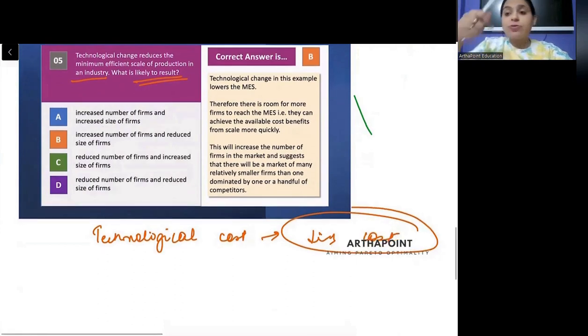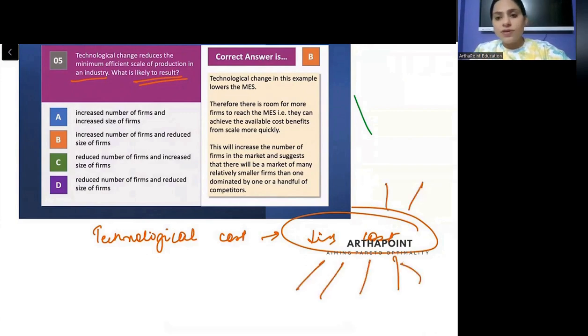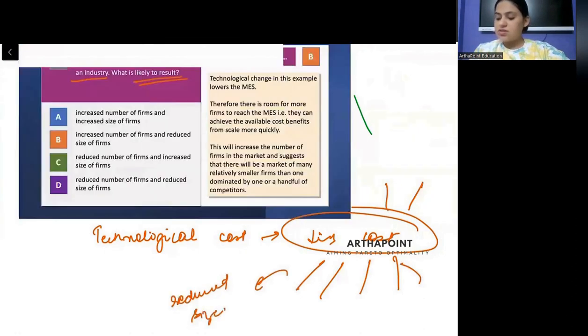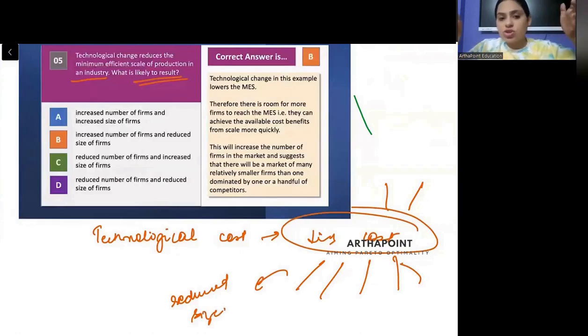Whenever the cost of production will be lower, more people will want to enter the firm. If I can produce at a lower cost, there will be more number of firms who will enter the market. When more firms will enter the market, each firm will have reduced size, reduced share. So there is going to be increased number of firms and reduced size of each firm. So answer should be B.